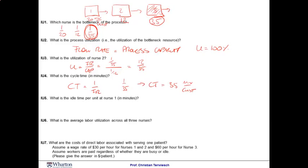What is the idle time per unit at nurse number one? Remember the idle time at a resource is the difference between the cycle time and the processing time. So the cycle time here we said is 35. We have a processing time of 20. And so that gives us 15 minutes between customers as the idle time at nurse number one.